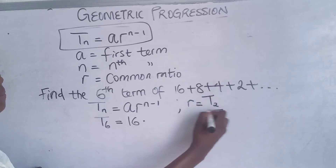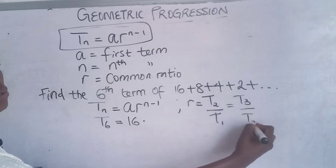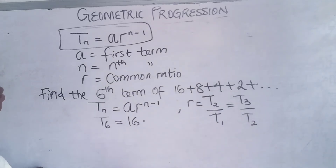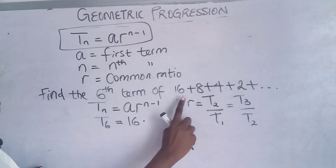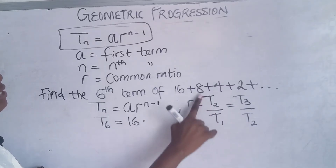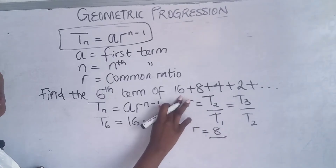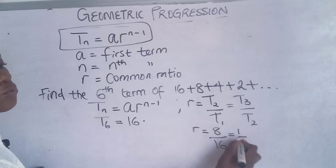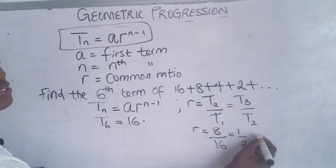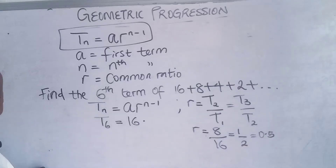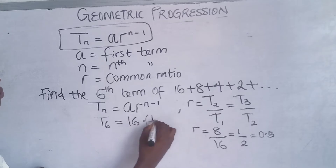'r' is your common ratio, and the common ratio is found by dividing the second term by the first term, or the third term by the second term — whichever you prefer. So r = second term ÷ first term = 8 ÷ 16 = 1/2. You can leave it as a fraction or decimal, whichever is fine. So our r is 1/2.